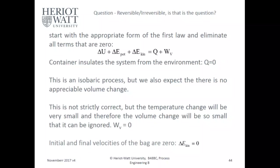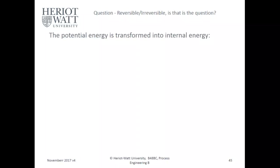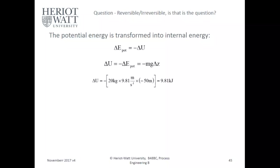The potential energy is transformed into internal energy, so the change in potential equals negative change in U. Delta U equals negative delta potential energy equals negative mg times delta z. That gives us negative 20 kilograms times 9.81 meters per second squared times negative 50 meters, which equals 9.81 kilojoules — negative because it's falling, and negative because of the energy change.